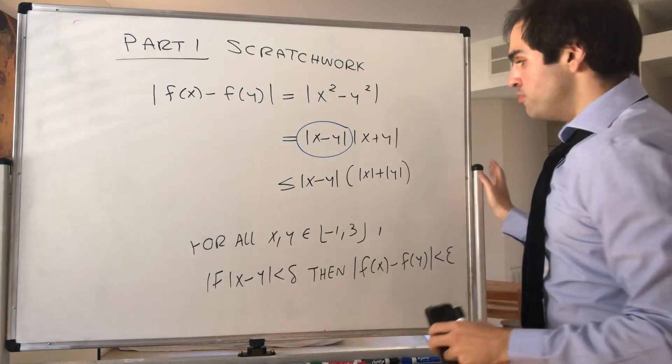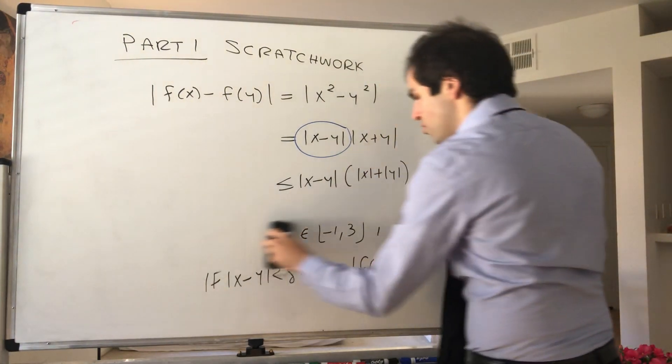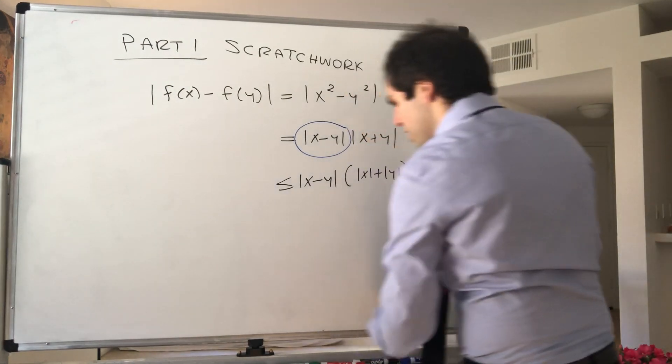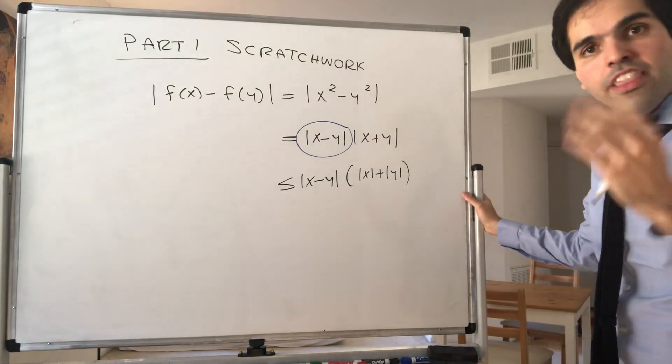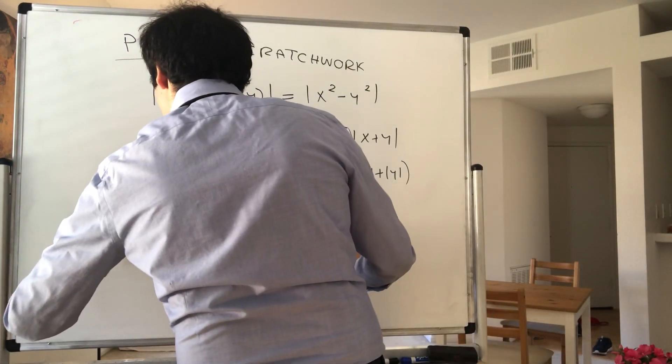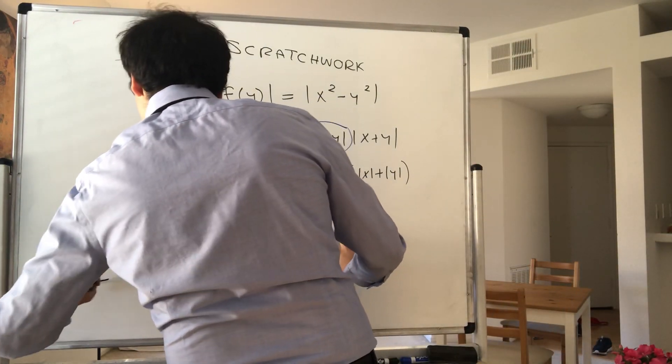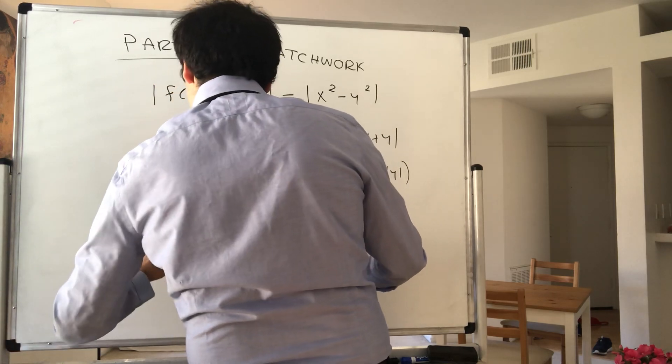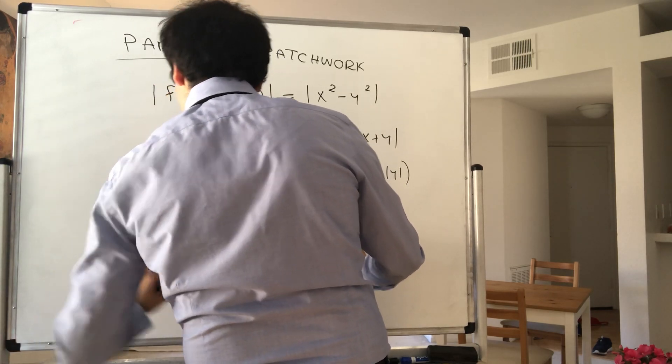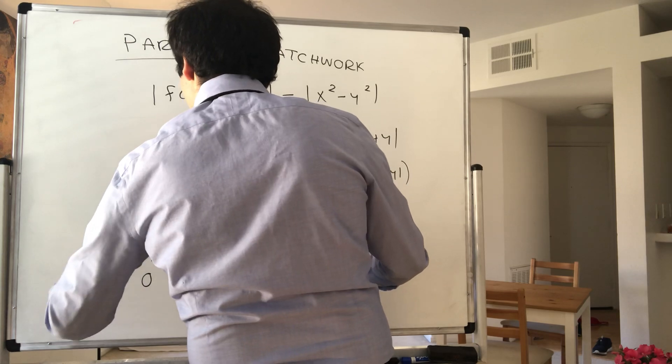But now, what is |x| and |y|? Well, remember that x and y are in the interval [-1, 3]. So this is -1, this is 3, and then maybe this is 0 here. And then x and y are somewhere here.